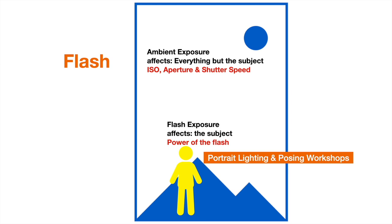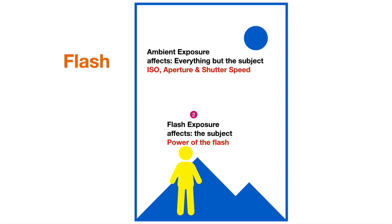When you use the flash, the first thing to do is to turn it off and expose for the ambient light. Exposing for the ambient light means you want to get a desired brightness for the background, and you want to ignore the brightness of the subject. Step 2: once you get a desired exposure for the ambient light, turn on the flash and adjust the power until the subject is correctly exposed. You might have to do a few test shots to get it right.